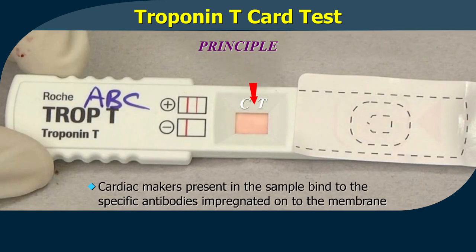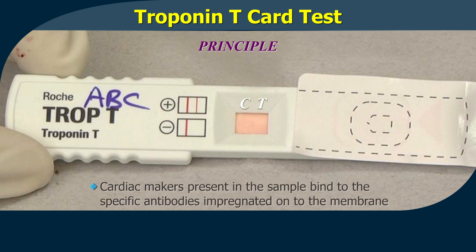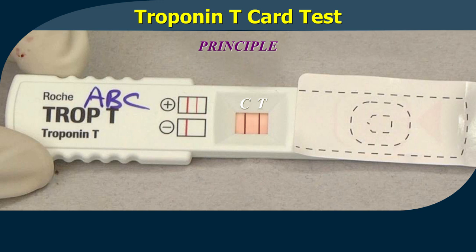the cardiac markers present in the sample bind to the specific antibodies impregnated onto the membrane. If the concentration of this marker in the sample is above the cutoff level, red bands appear at the corresponding test lines and the control line. If the concentration of the marker in the sample is lower than the cutoff level,